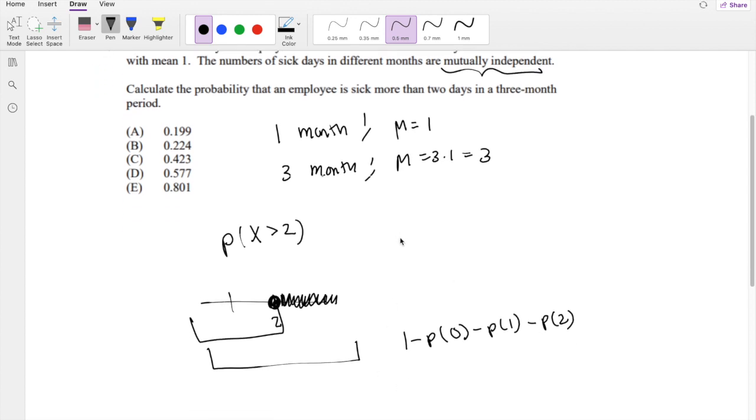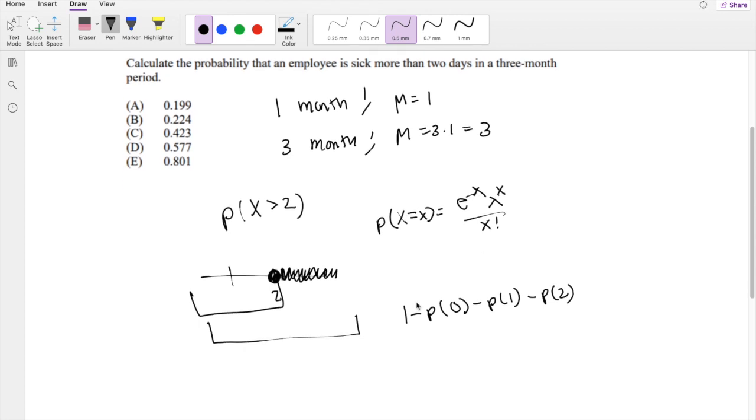Now this is kind of easy, right? We just have to use the Poisson distribution formula where P(X = x) equals e to the negative λ, λ to the x, over x factorial.